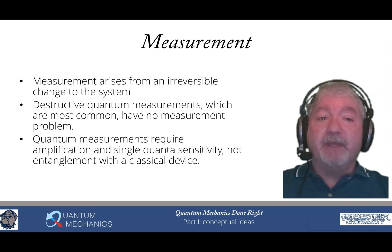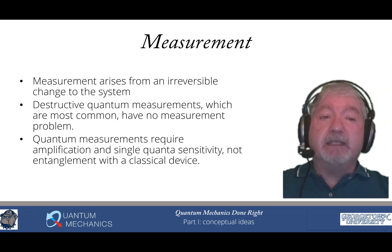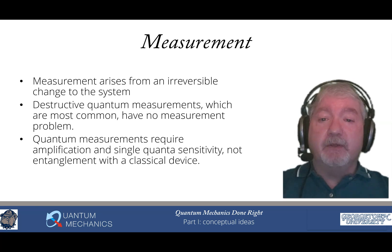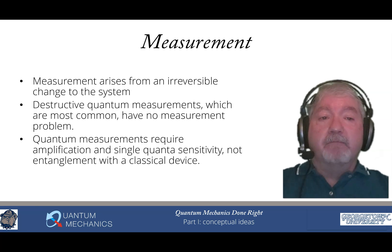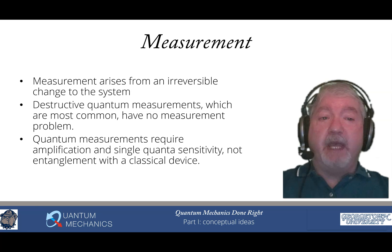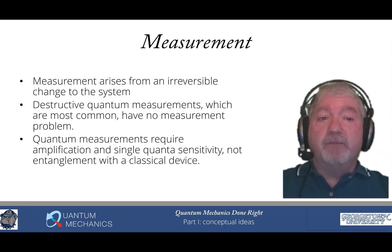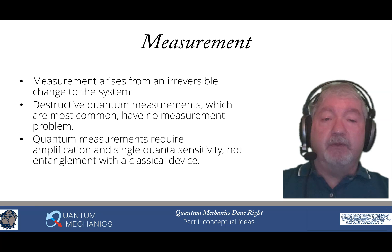Quantum measurements also require amplification because quanta are so small we can't see them or detect them in any easy way. We need to find a way of amplifying the signal so that we can measure it, but we have to maintain that single-quanta sensitivity, otherwise we're not measuring single quanta. That's actually where the true measurement problem is — figuring out how to do that, which is a really hard problem. It is not that the quantum state gets magically entangled with some classical device and at some unknowable moment collapse occurs, and it is not that decoherence in a classical device allows the system to collapse. Measurement works in much more sophisticated ways than that, and the whole measurement problem is just created to have a problem for people to talk about. It's not a real issue in most of quantum mechanics.